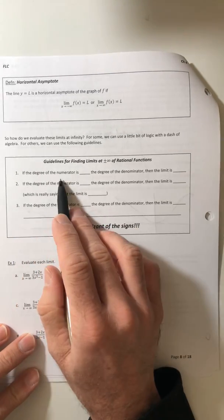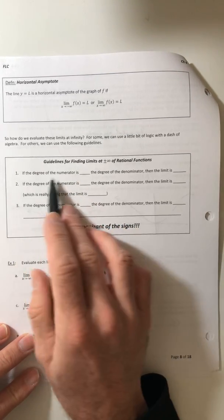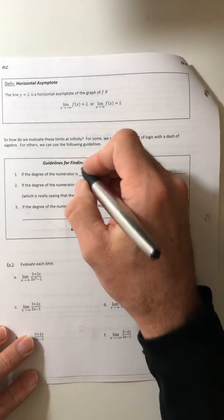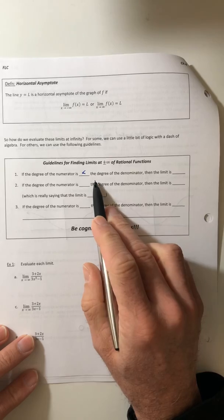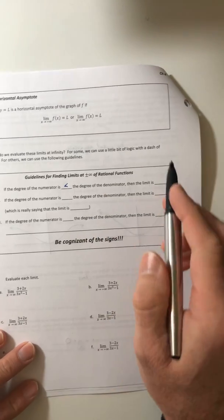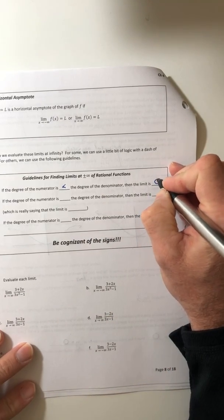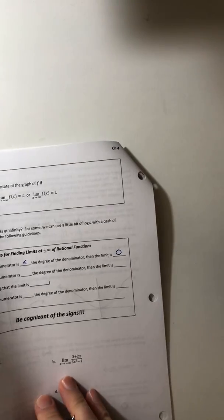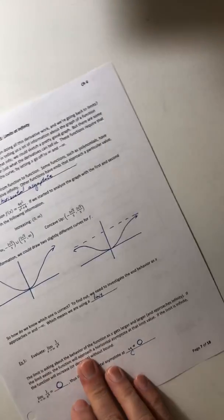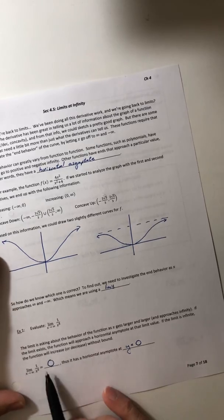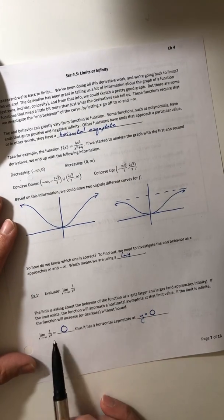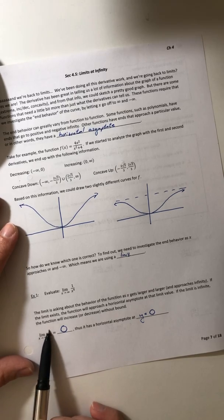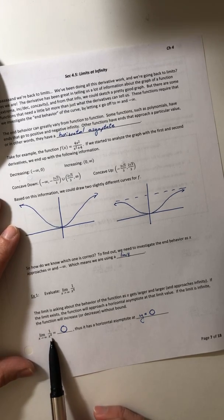So if the degree of the numerator or the highest exponent on the top is less than the degree of the denominator, then the limit is going to equal zero. And that's how I could tell so fast that that previous limit was equal to zero. Because if you look, the denominator has the bigger degree, the numerator has a degree of zero, the denominator has a degree of four.